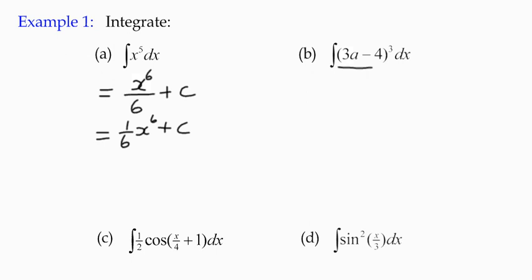Second example: we've got a composite function. We've got 3a minus 4 to the power three. That was one of the development formulas in the previous slide. So if we are integrating that, the rule is we write down the inside function, 3a minus 4, we're going to increase the power by one to the power four.